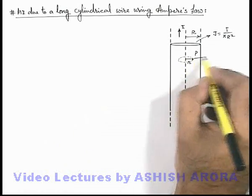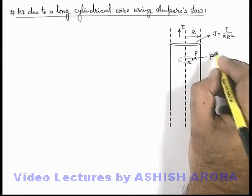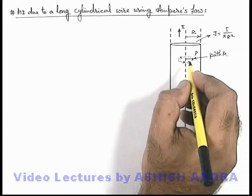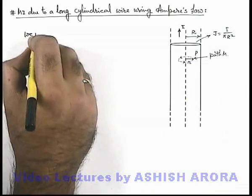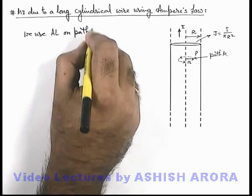And if we consider the same line, circular line as a path M, which is in anti-clockwise manner, and we use Ampere's law on path M...